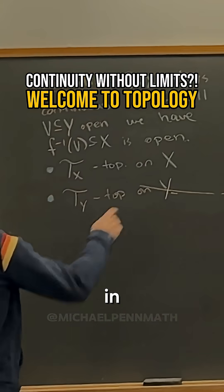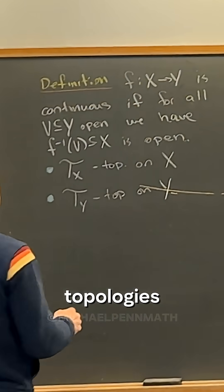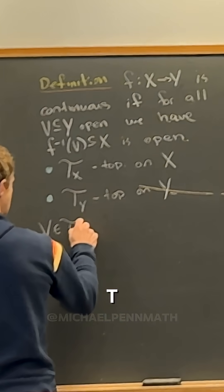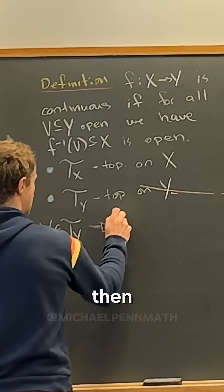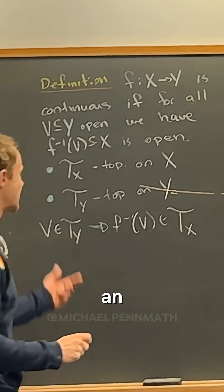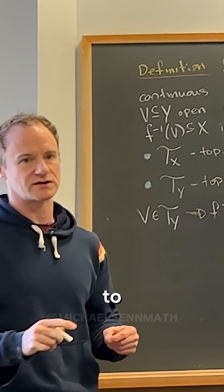So this phrased in terms of the topologies means that if v is an element of Ty, then the pre-image of v is an element of Tx.